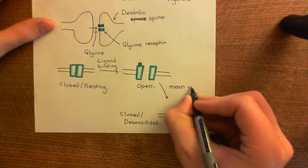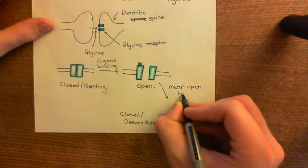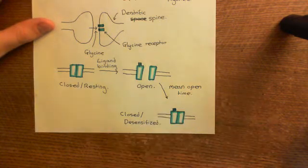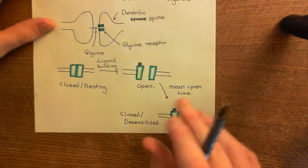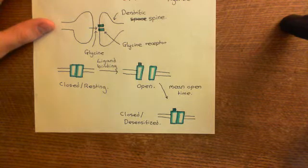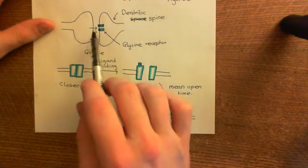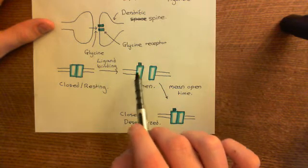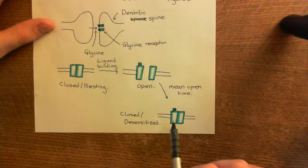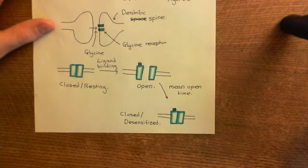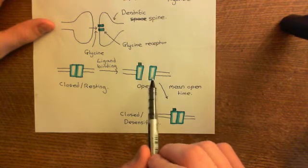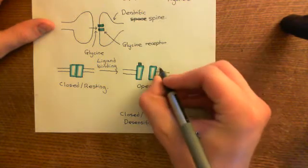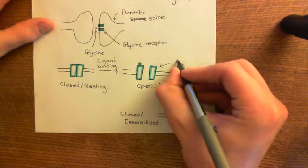We can say there's an average, but we can't say for sure how long it will actually take for any receptor at any particular time to go from being in the open to the closed, desensitised state. So it's a probabilistic event. To summarise, when the ligand binds to the glycine receptor, it's going to cause that glycine receptor to be transiently in this open state before it moves on to being in this closed, desensitised state. Now the question is, what does it do when it's in this open state?